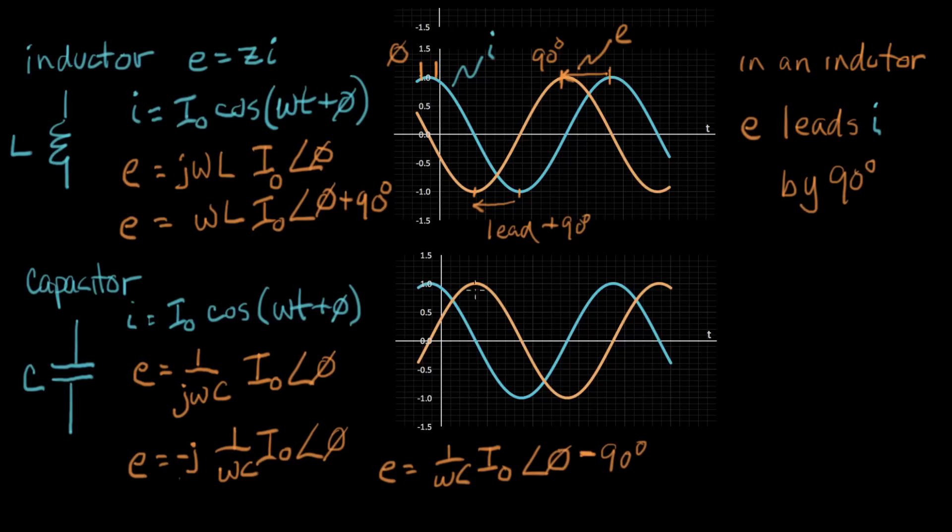So here's our original current here. Let me label that. Here's I. And now we have our voltage, E, looks like this. Here's E. And what we see, let me go out here and measure it here. Here we have a phase lag, we're pointing to the right of 90 degrees. And that we call a lag.